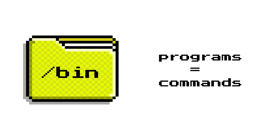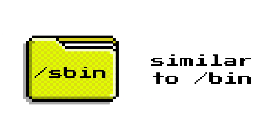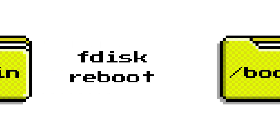Slash bin contains the basic programs you need to use the system, like ls, cp, or cat. Slash sbin is similar, but it's for system administration tools, like fdisk or reboot, usually only used by root.